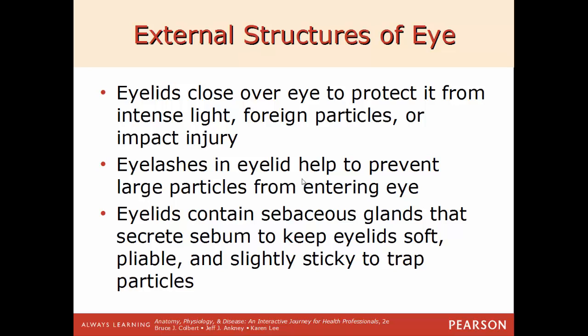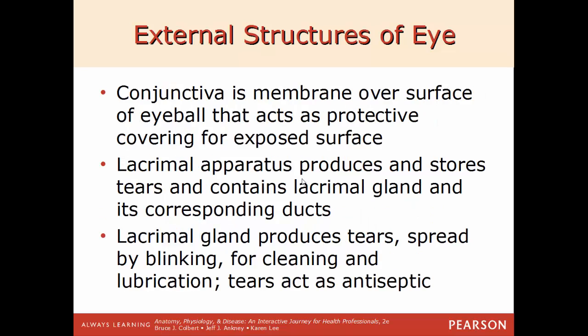Your eyelashes, located in the eyelid, help protect larger particles from entering the eye. Within the eyelid you'll find sebaceous glands that secrete sebum, keeping the eyelids soft and pliable, and slightly sticky to trap particles. The conjunctiva is a membrane over the surface of the eyeball that acts as a protective covering — this is what gets infected when you get pink eye, also called conjunctivitis. The lacrimal apparatus produces and stores tears, containing the lacrimal glands and corresponding ducts.